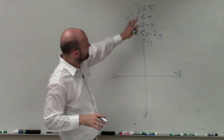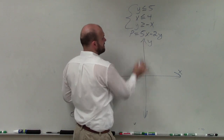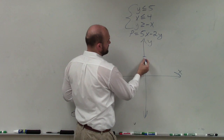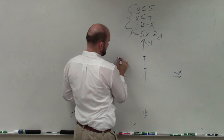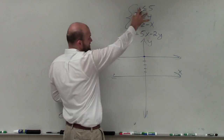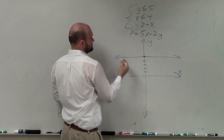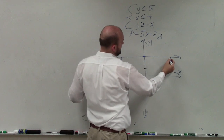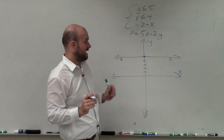When graphing y is less than or equal to 5, the y-value is 5. So I go up to 1, 2, 3, 4, 5 and make a nice big dot. That's going to be a solid line going across. Since it's less than 5, that's going to be shaded down. I like to save my shading at the end — I just like to use arrows.